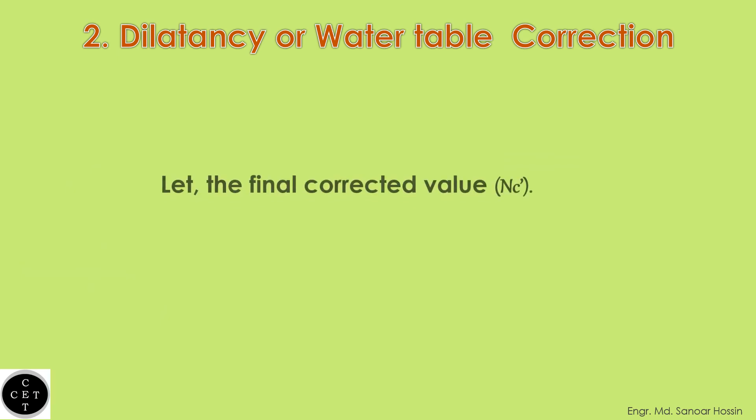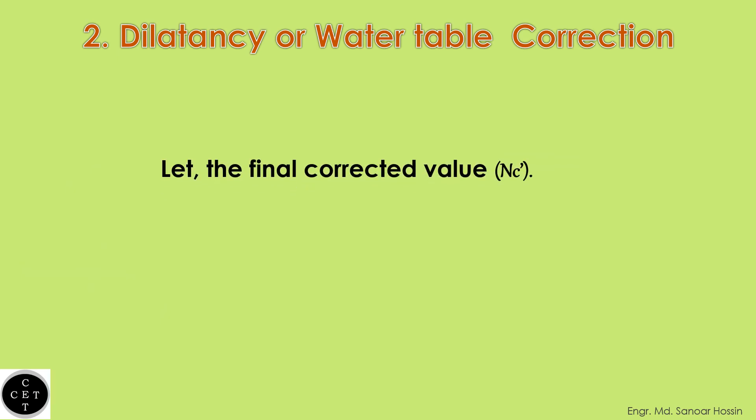Let the final corrected value be Nc prime. Then Nc prime equals 15 plus one-half of (Nc minus 15).